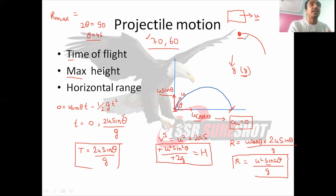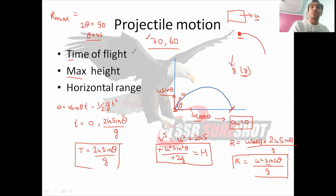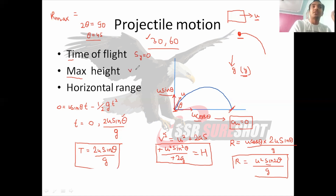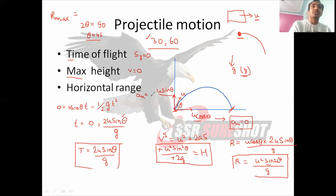Let us revise all three things: for time of flight, we equated displacement in the y-direction to zero. For maximum height, we equated final velocity to zero. For horizontal range, we used the fact that acceleration in the x-direction is zero. If you remember these three key points, the entire concept of projectile motion becomes quite easy.